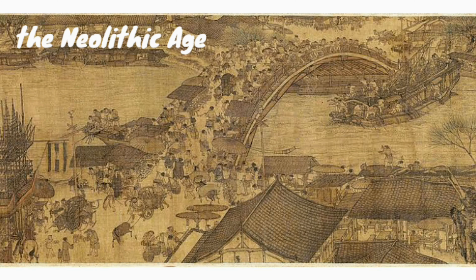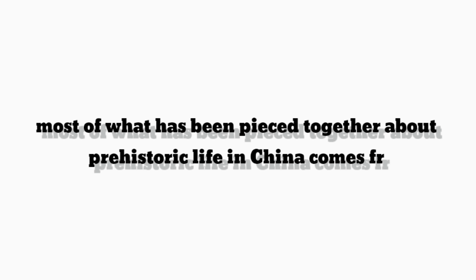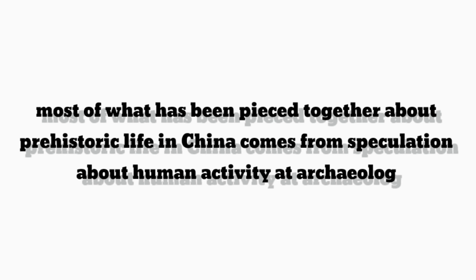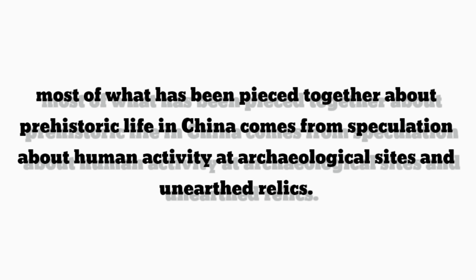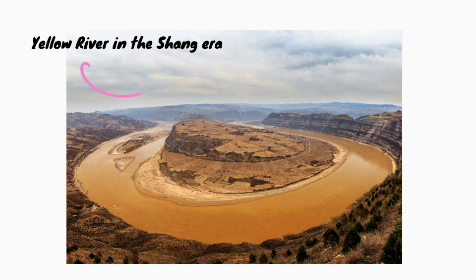Historic China's chronology is divided into the Paleolithic Age, the Neolithic Age, and the Bronze Age. Without any reliable historical records, most of what has been pieced together about historic life in China comes from speculation about human activity at archaeological sites and unearthed relics. Chinese civilization began along the Yellow River in the Shang era and spread from there when Bronze Age culture reached its peak.